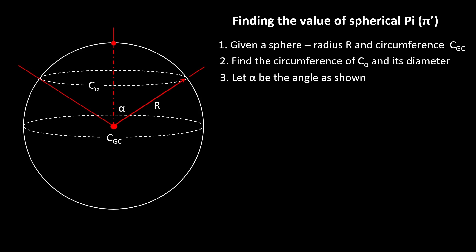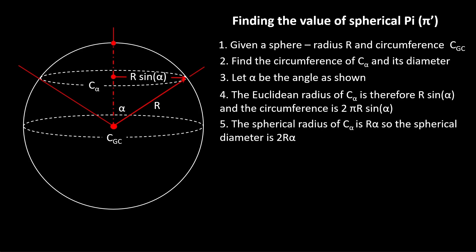Let's let this angle be angle α between the vertical line and the radius line. The Euclidean radius of that circle is therefore R sin(α)—that's just simple trigonometry. So the circumference of that circle is 2πR sin(α). But the spherical radius of that circle is Rα, so the spherical diameter is 2Rα.